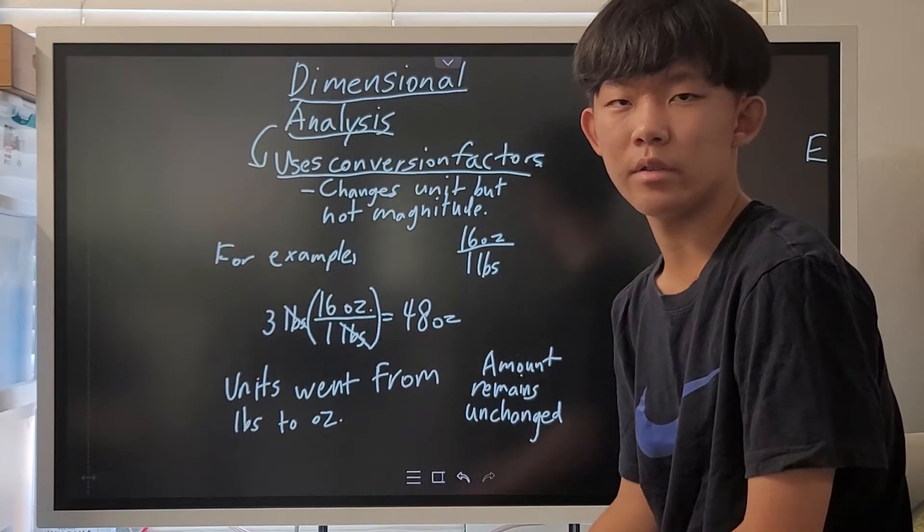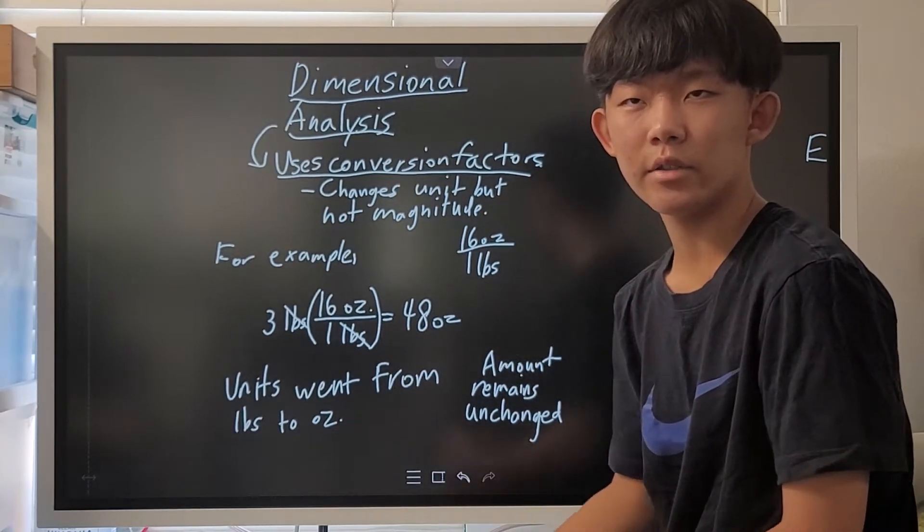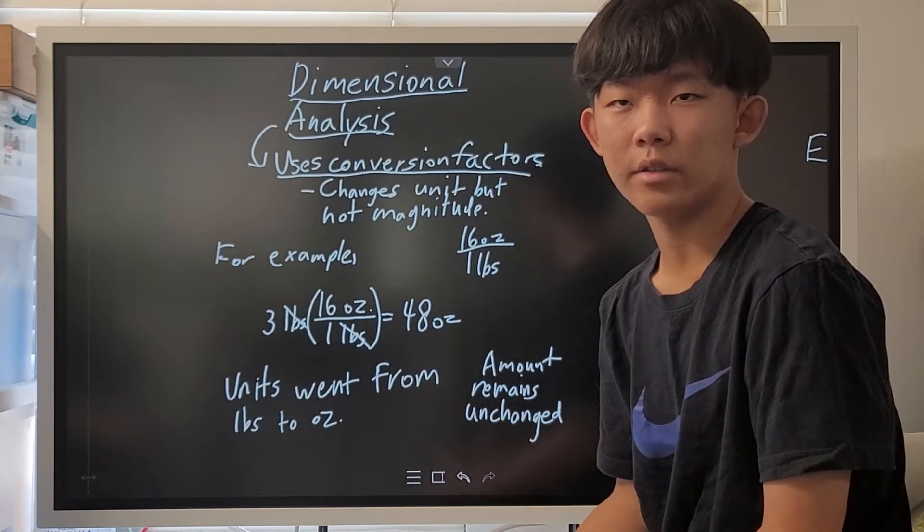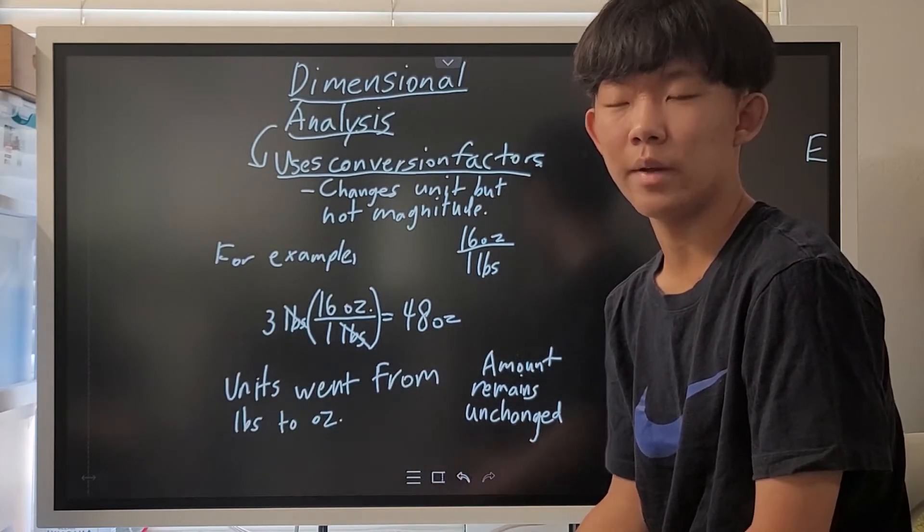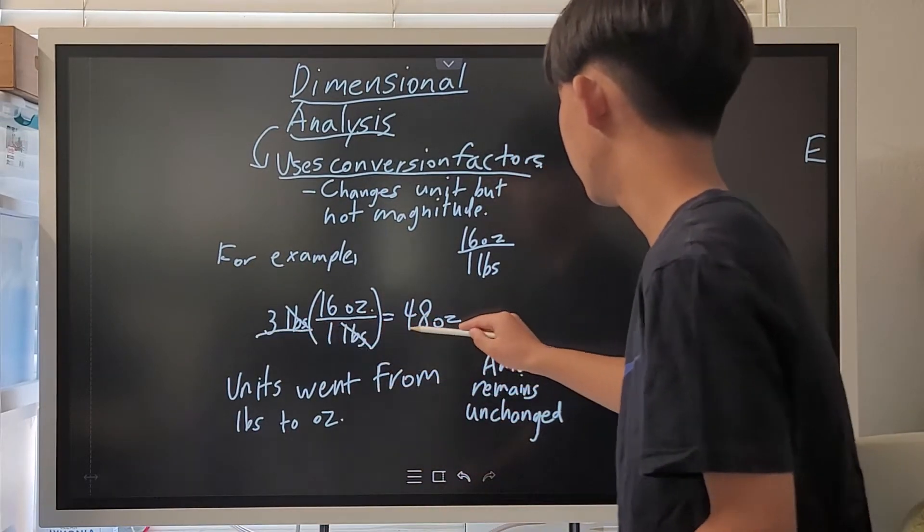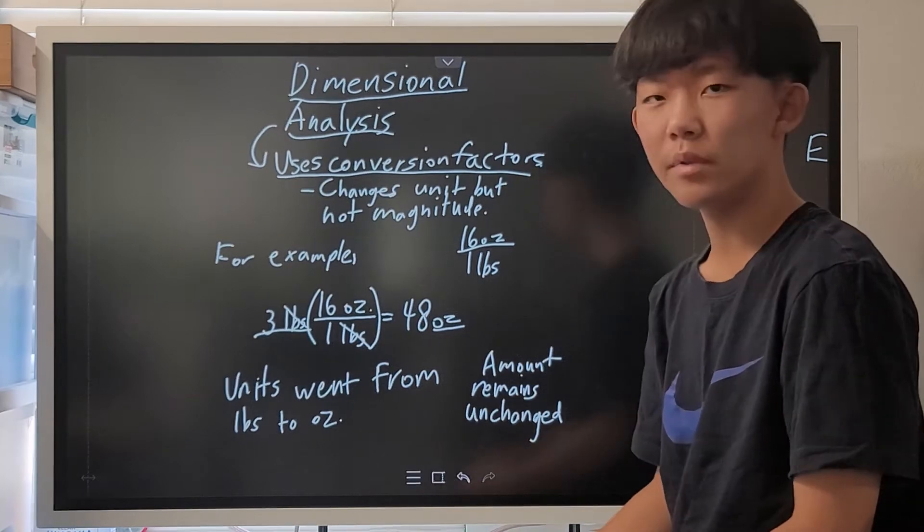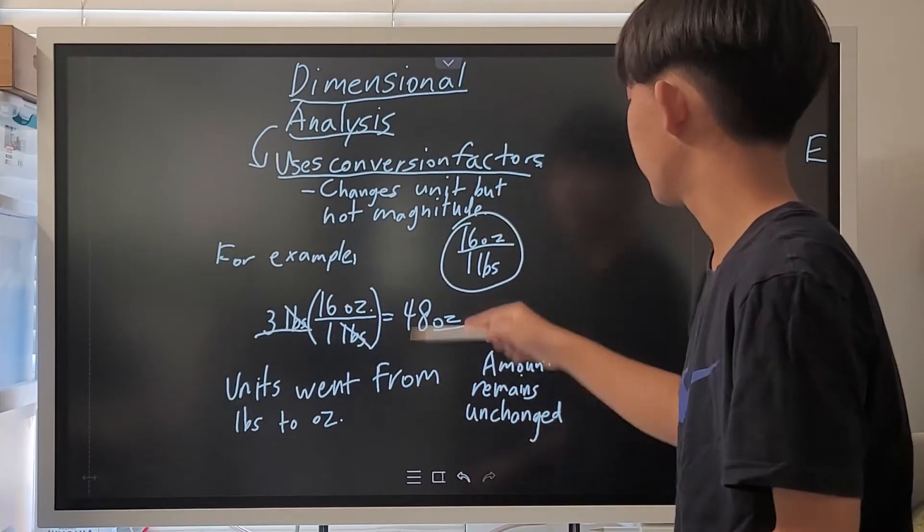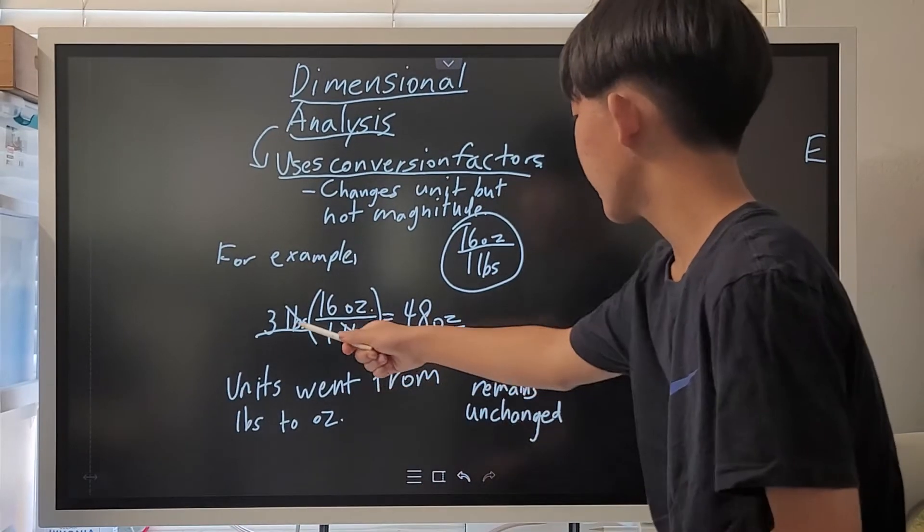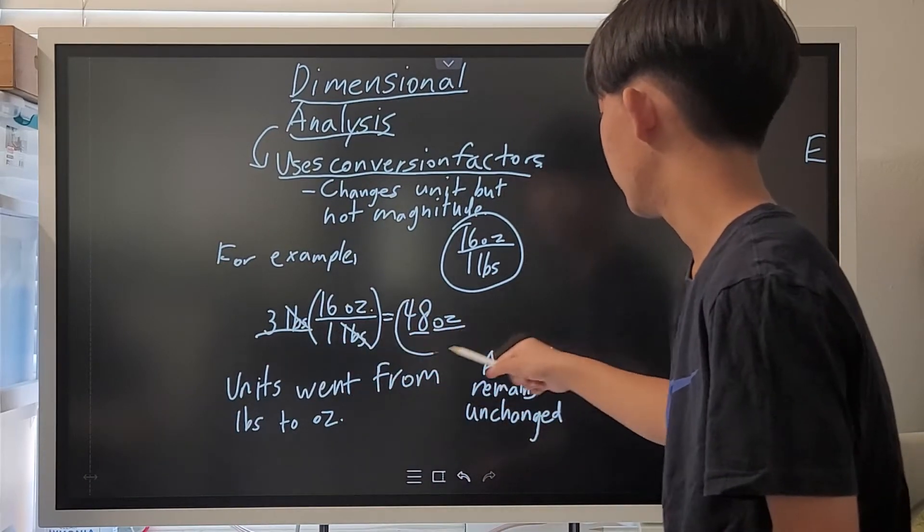The thing that's so good about dimensional analysis is that you can actually change the units and make like terms, but not change the overall magnitude. For example, if I want to convert 3 pounds to ounces, I can simply multiply by this conversion factor I just showed you to get 48 ounces. As you can see, the pounds cancel and you can get 48 ounces.